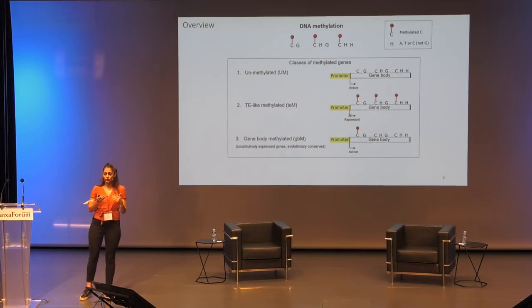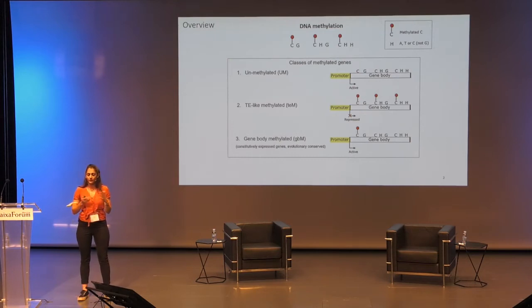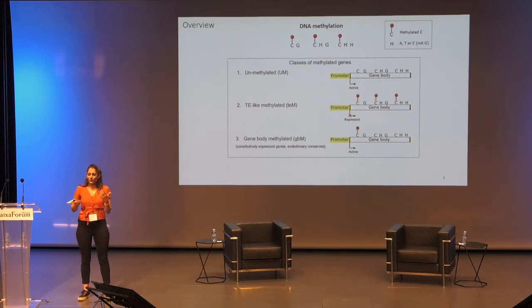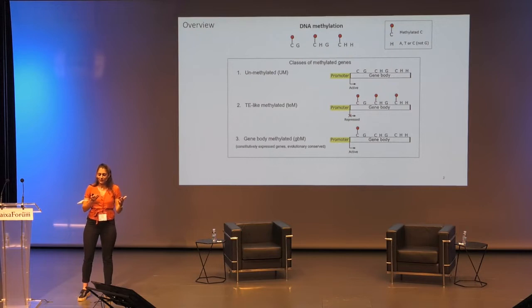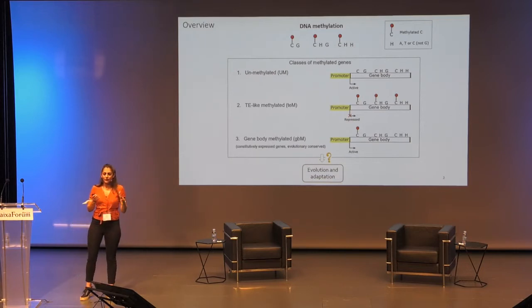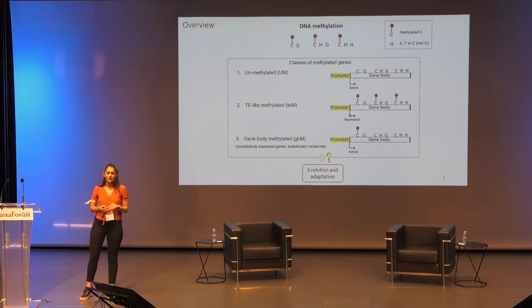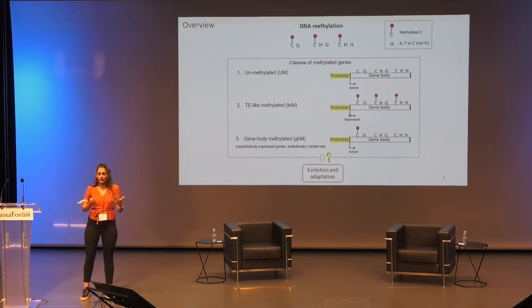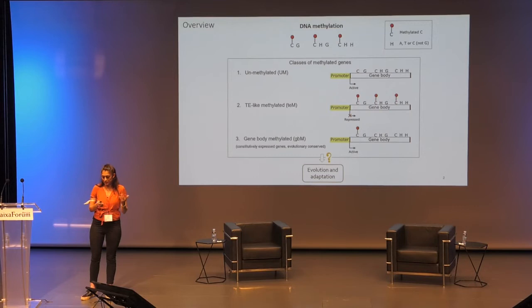Gene body methylated genes are usually constitutively expressed, and this kind of methylation is evolutionarily constrained — orthologs across species present similar methylation patterns. But at the same time, in Arabidopsis thaliana, if you experimentally remove DNA methylation, gene expression will not be affected that much. So the function is really not clear. What has been proposed is that this kind of methylation might have some role in the evolution and adaptation of species to their environment, but today I'm trying to present some very recent data analysis to provide some insights in this direction.